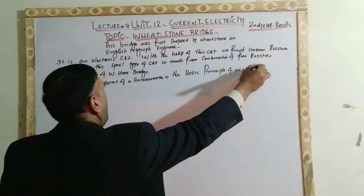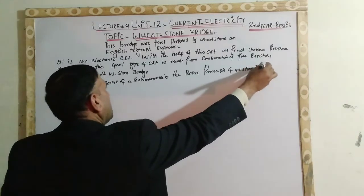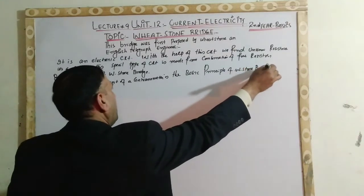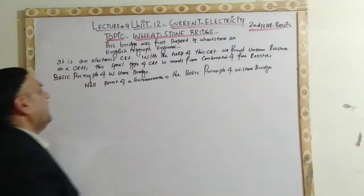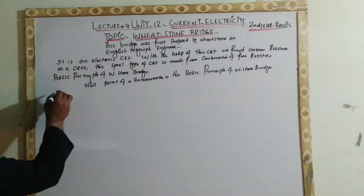Now we will understand the null point in the circuit diagram — what do we mean by null point? We will understand this with the help of the circuit.